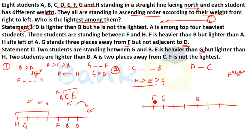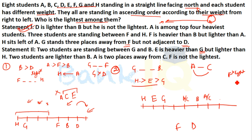According to E and H, if we compare G with A or C — A can't be the lightest, C can't be the lightest either. The remaining candidates are F and D. But since F is not the lightest, and if F is not here, then it cannot work — so D must be the lightest. This means only Statement 2 alone is sufficient to answer this question.